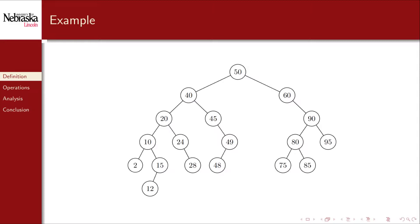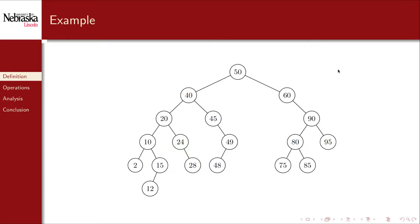Here's a larger concrete example of a binary search tree. At the root we have 50, and every node in its left subtree is less than 50, and every node in its right subtree is greater than 50. The same property holds for every node in the tree. For example, deeper in the tree we have key value 20 — every node in its left subtree is less than 20, and every value in its right subtree is greater than 20.